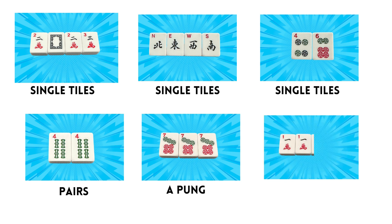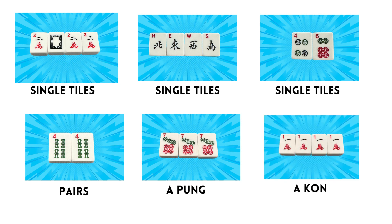Then we move on to our Kong. A Kong is any four like tiles. Again, any of the tiles — flowers, dragons, winds — and it can even be Jokers. One or all can be used as Jokers in this grouping.